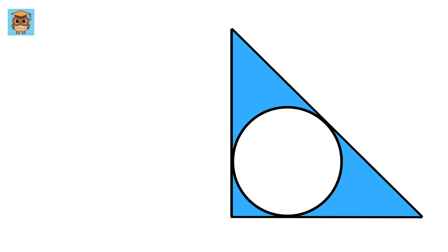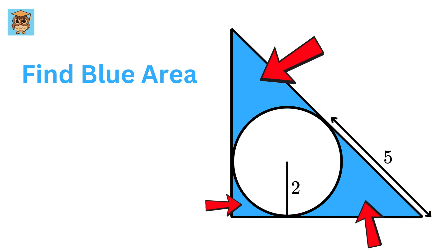This is such an amazing problem. We are given this right triangle whose length of this part of the hypotenuse is 5, and we have a circle inscribed in it whose radius is 2 units.